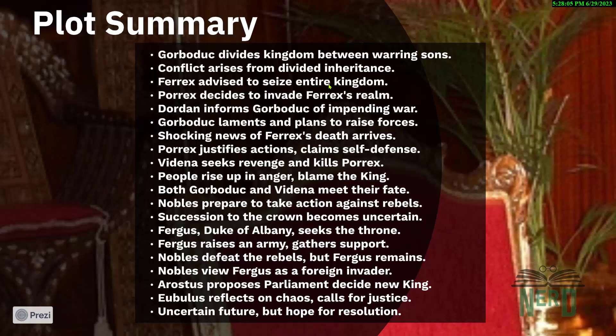The nobles manage to defeat the rebels, but then they find out that Fergus is raising an army too. They say, 'No way are we letting this foreign invader take over,' and stand against Fergus to protect their turf. A wise guy named Arostas and another character Eubulus suggest: 'Let's let Parliament decide on a new king — we're really into the whole democratic process.' Eubulus also complains about the chaos in the country and says they should have called a Parliament meeting while the king was still alive, but he's confident that justice will eventually prevail.